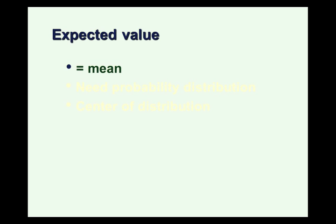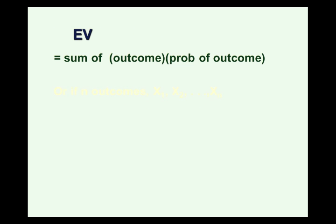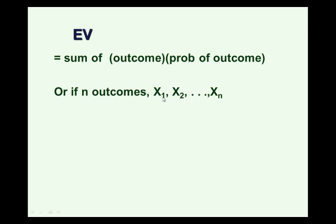When we calculate the expected value of a distribution, we call this the mean, and we need the probability distribution to do it. The expected value tells you the center of the distribution — if you draw from this distribution over and over again, most of your draws will be close to the expected value. The expected value is really the sum of a product: each outcome weighted by its individual probability. So if there are n possible outcomes X1 through Xn, the expected value is the sum of each outcome times the probability that outcome happens.